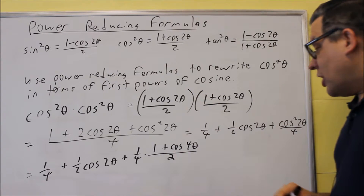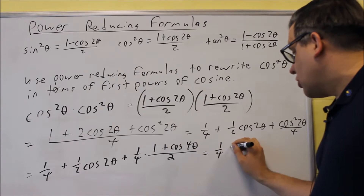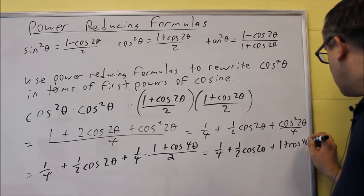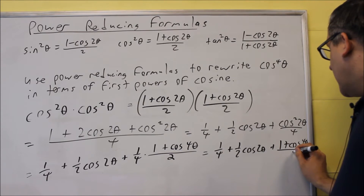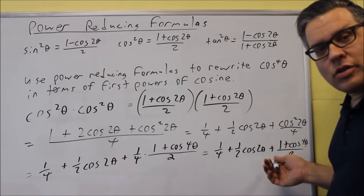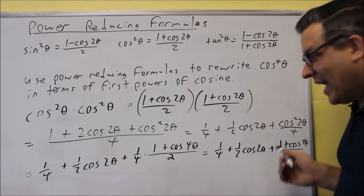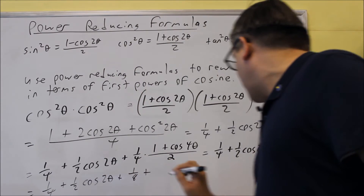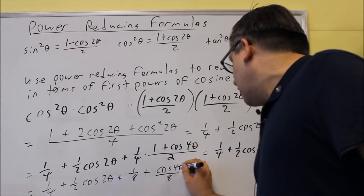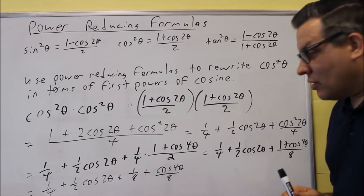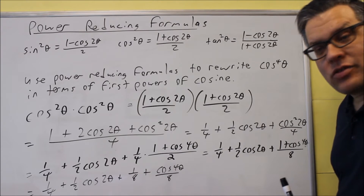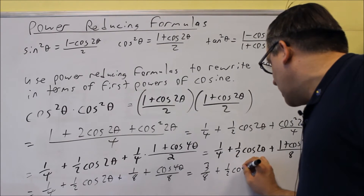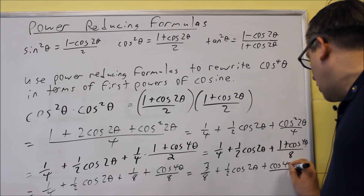Now we multiply those out and get eight in the denominator. That gives us one-quarter plus one-half cosine(2θ) plus (1 + cos(4θ)) over eight. We can go one more step: distributing the eight gives one-quarter plus one-half cosine(2θ) plus one-eighth plus cosine(4θ) over eight. Since one-quarter equals two-eighths, adding two-eighths and one-eighth gives three-eighths.